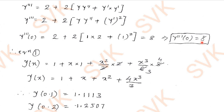Substituting all values — y₀ = 1, y'(0) = 1, y''(0) = 2, y'''(0) = 8 — into equation (1), we get the polynomial: y(x) = 1 + x + x² + (4/3)x³. Substituting x = 0.1 gives y ≈ 1.1133, and substituting x = 0.2 gives y ≈ 1.2507.